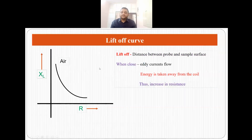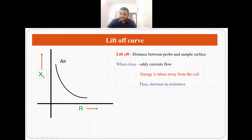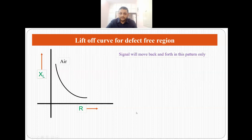The third concept is liftoff. Liftoff is nothing but the distance between the probe and the sample surface. When the probe is in air, the impedance is X_L (reactance) and R (resistance). When the distance between probe and sample surface is very high, reactance is more and resistance is less. As the distance decreases, the liftoff decreases, eddy currents flow, energy is taken away from the coil, and this leads to an increase in resistance. For a defect-free region the signal will move back and forth in that pattern only.